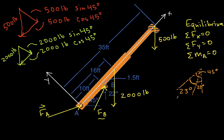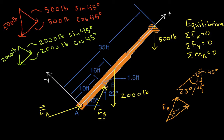Let's draw our triangle. We have a y component and we have an x component — that would be a right angle — and we have F sub B as the length of the hypotenuse. We know that the angle between F sub B and the x axis is 23 degrees. So the x component is going to be F sub B cosine 23 degrees.